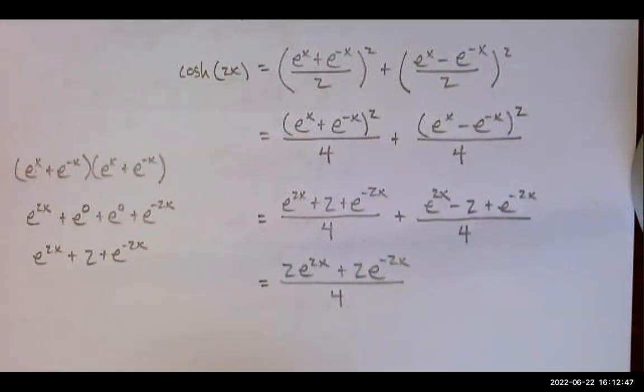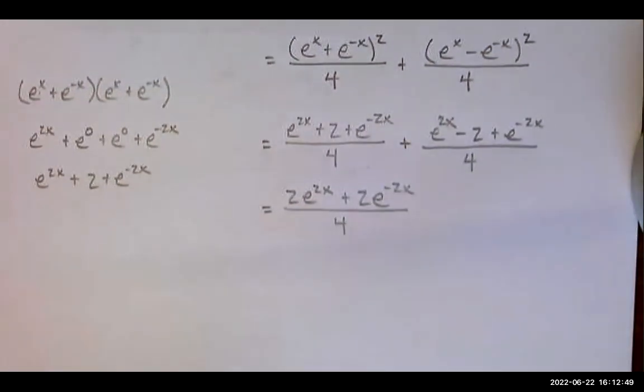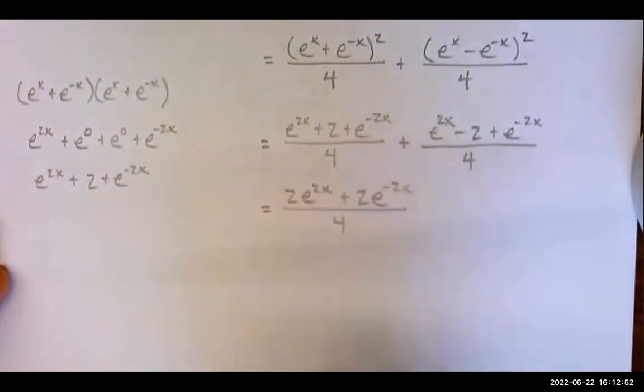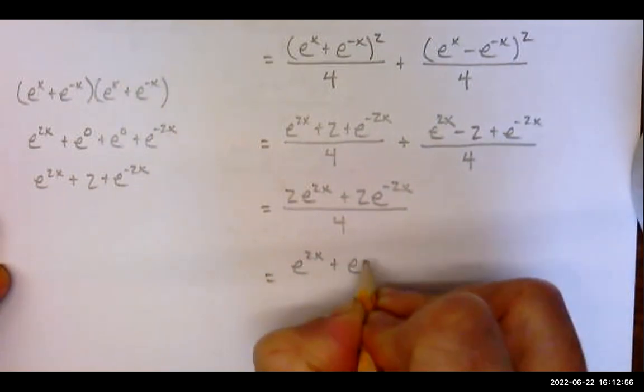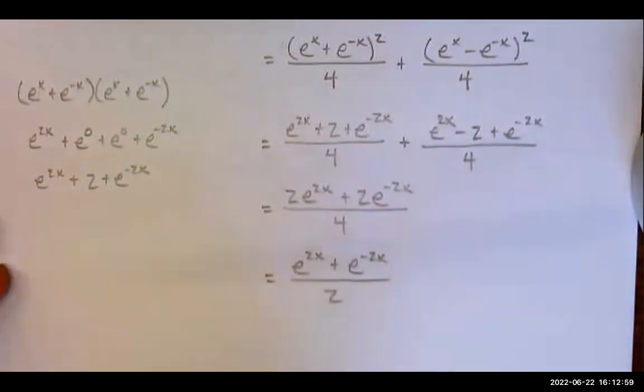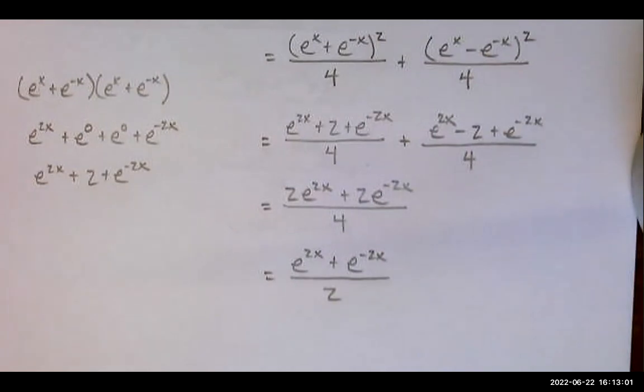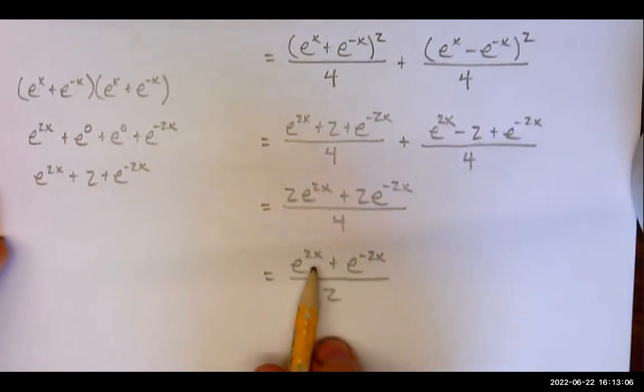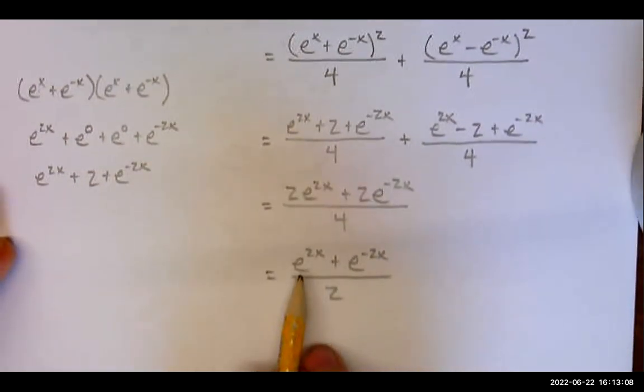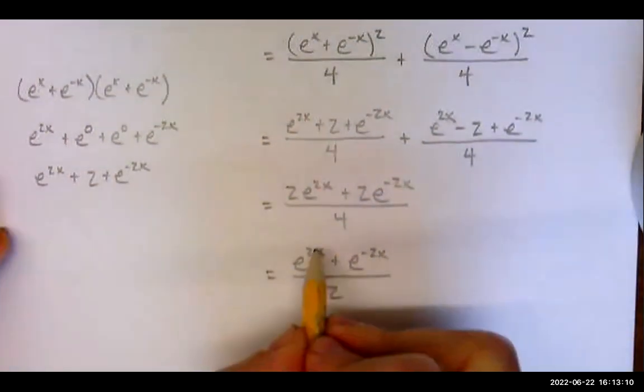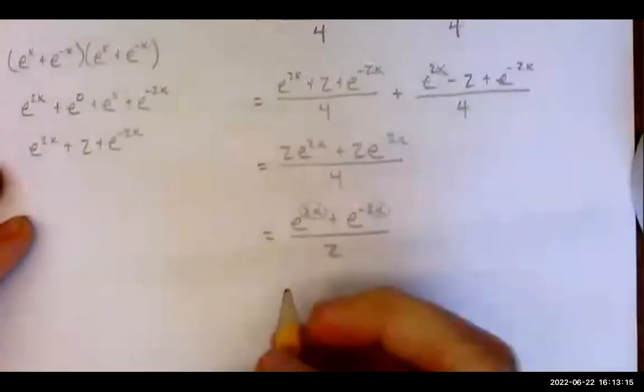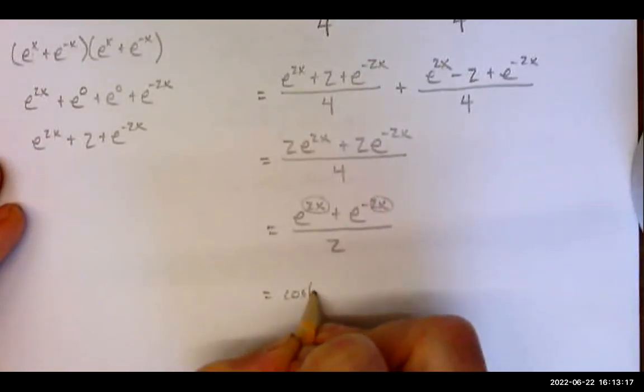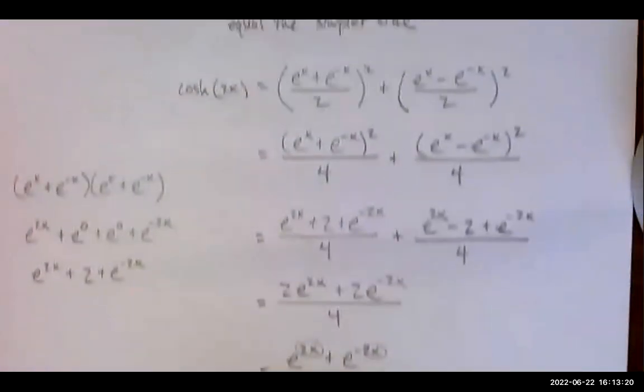So far, so good. Everything has a multiple of two. We can divide two from each term and arrive at this. And at this point, we've got it. Notice this is exactly the definition of cosh x, except we've got two x's there instead of x, and so this is cosh 2x, and it's proven.